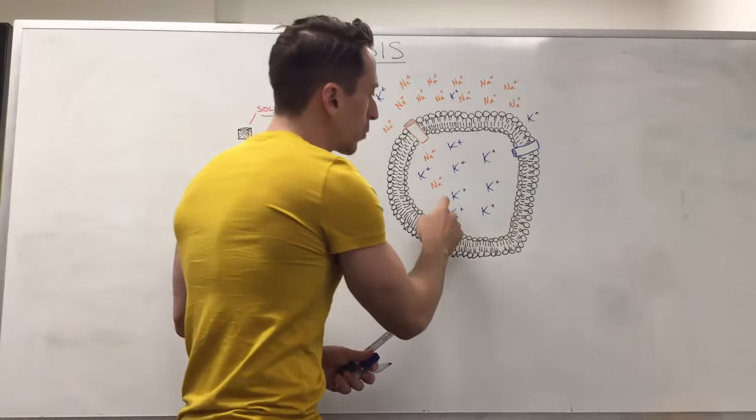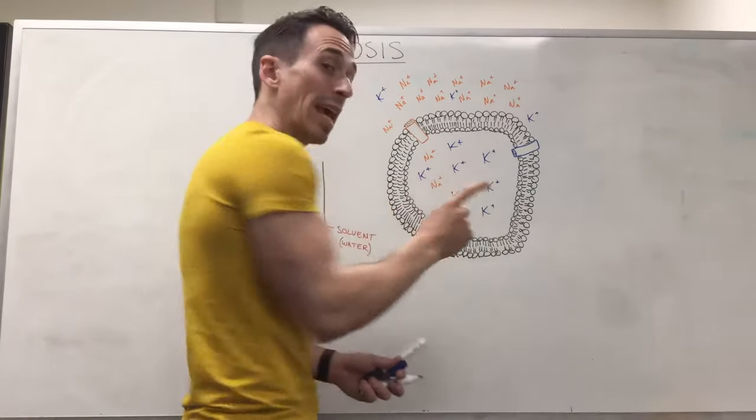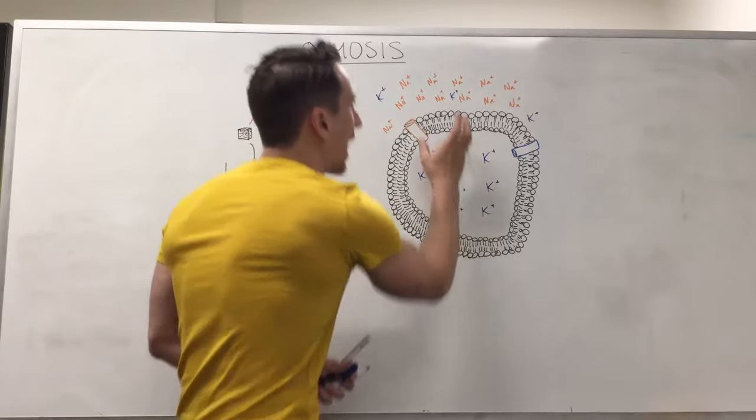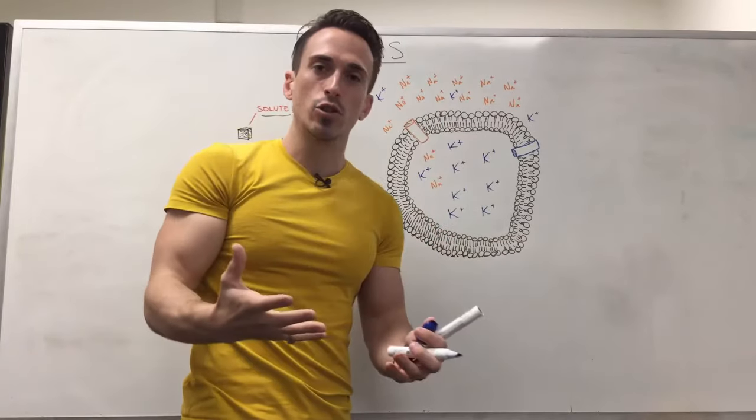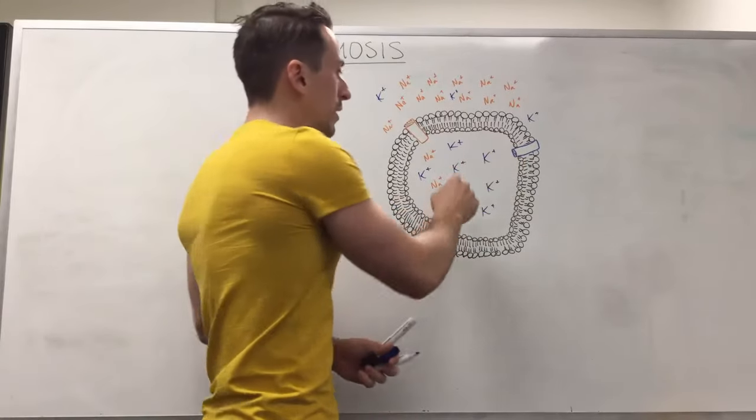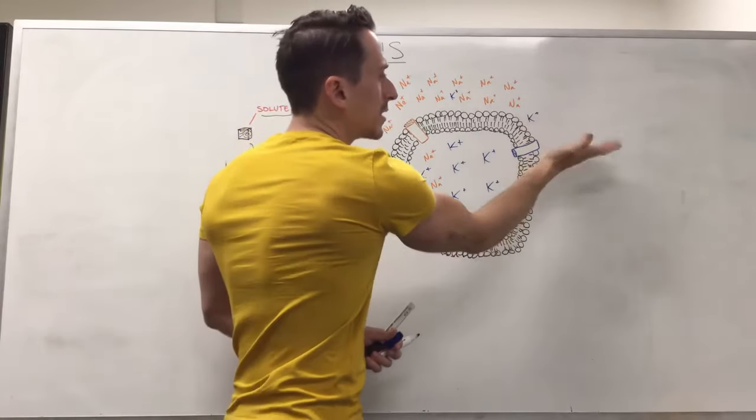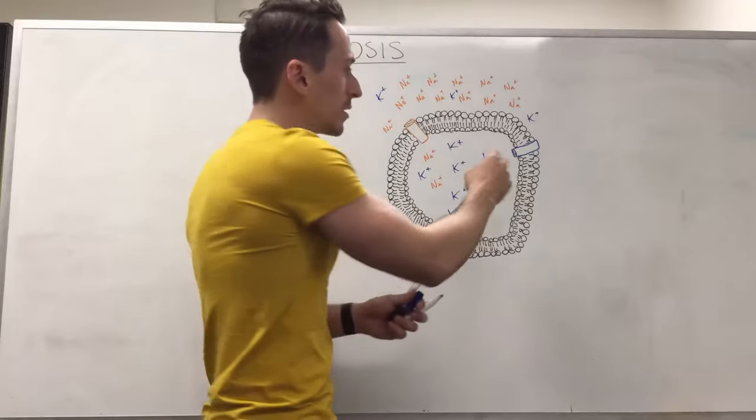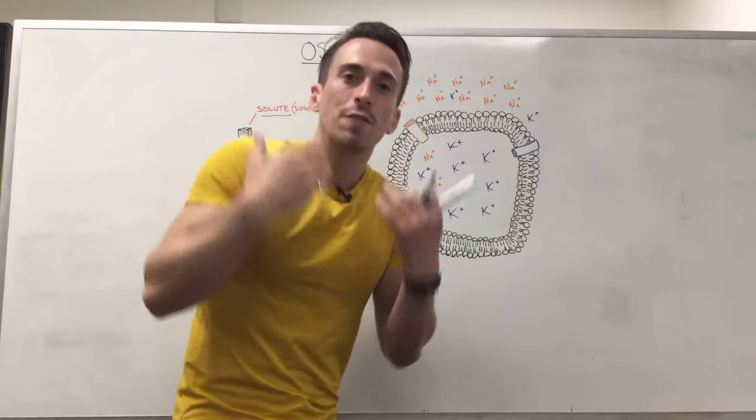You can also see vice versa, we've got huge amounts of potassium ions inside the cell, they want to diffuse out to balance out their concentration. Now we have channels in our cells for specific ions and if their lids are open then they allow for this diffusion to occur and that's called facilitated diffusion.